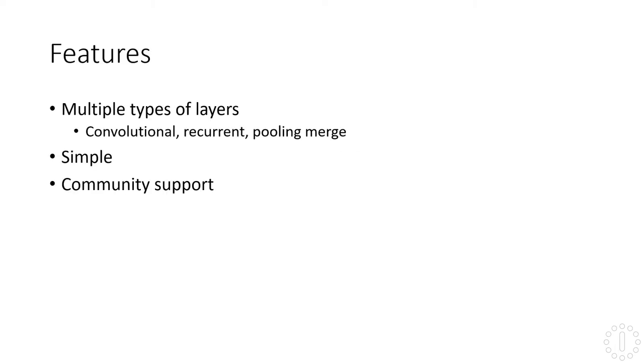Keras is a library intended specifically for neural networks, and it allows us to create neural networks at a high level similar to scikit-learn, but it offers much more options than scikit-learn does for neural networks. We'll go over some of the features that Keras has that make it good — its advantages that make it attractive to use.